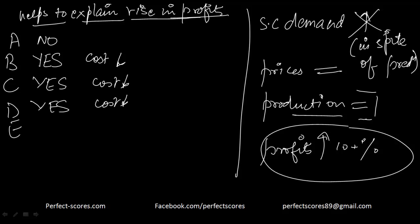E says rainfall was higher, allowing the growers to save money on artificial irrigation. So again the cost came down and it helps to explain the increase.